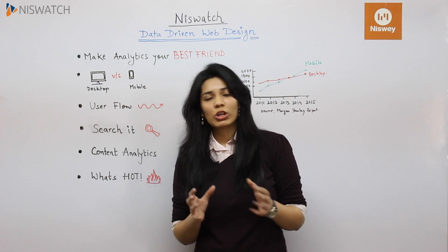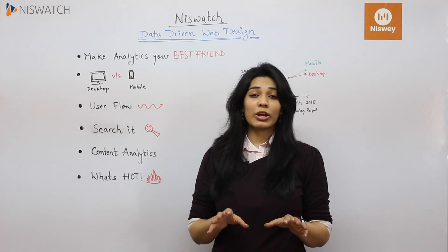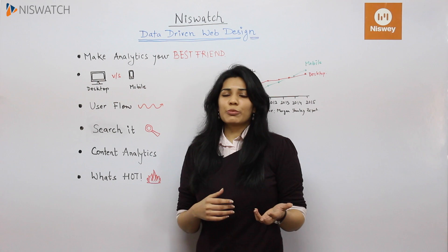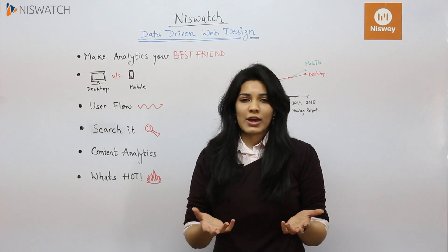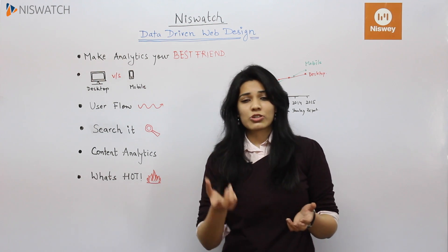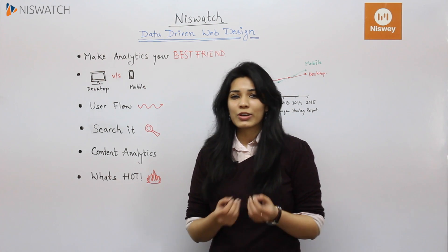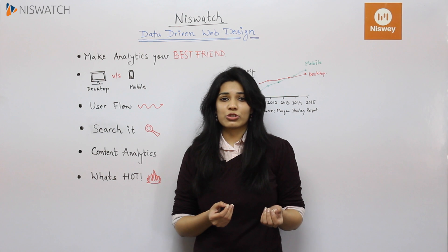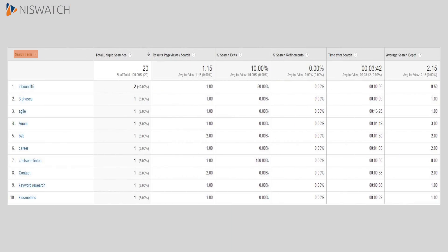How cool — or creepy, depending on how you look at it — if you could actually read a person's mind. In terms of websites, you actually can. In analytics, there's a section called site search, which tells you exactly what your target audience is searching for. For example, if they're searching for a price on a product or service you're offering, they're typing it into search. But if you already have that information upfront, it'll be much easier for them.